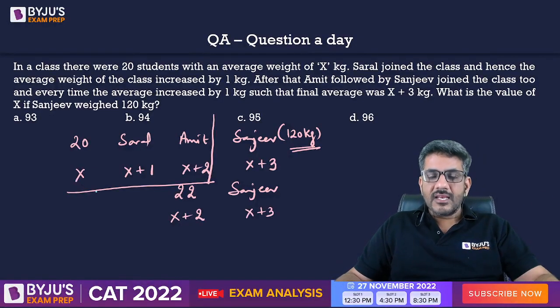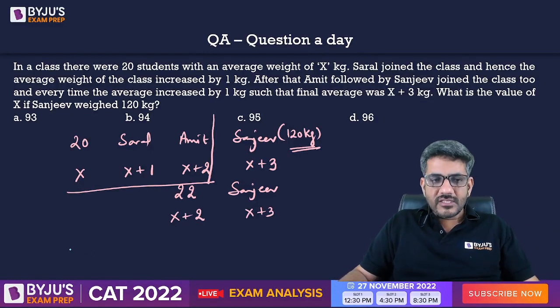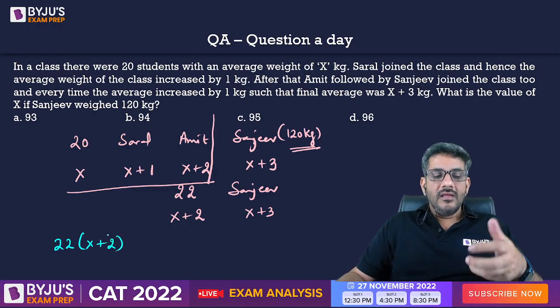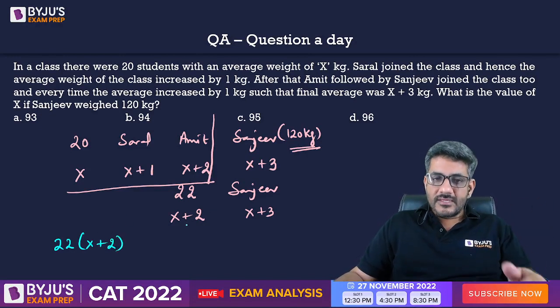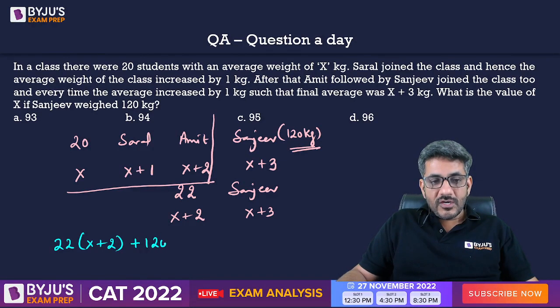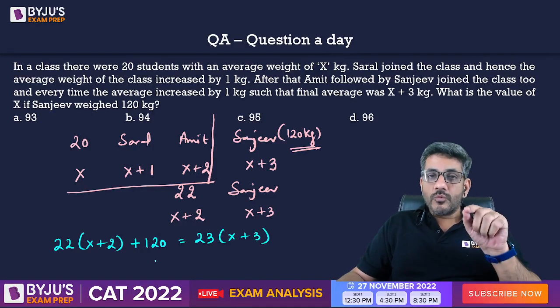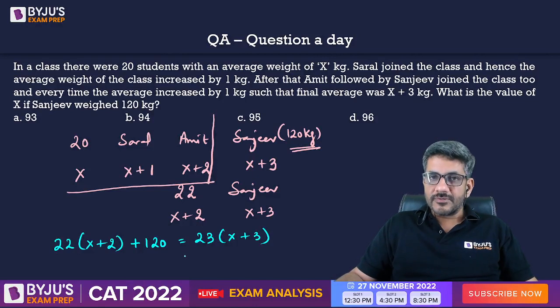Of course, once again, I have a general method of solving the question. Previously, the total weight was 22 into x plus 2 because 22 kids were there. x plus 2 was the average. Then Sanjeev comes in with a weight of 120. So, plus 120. This becomes the total weight of the class now. And this should be equal to 23 into x plus 3 because now we have 23 people with an average weight of x plus 3. I can solve it for x.